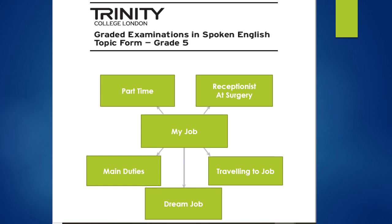I have chosen my job here, and the job I have chosen is receptionist at a surgery. You can write whatever you like, whatever your job is. You have to download this form from the internet, from the Trinity College website, and then fill it in. I filled it on the laptop, so you can see these things are typed, but you just print the form and fill it with your hand — handwritten is acceptable. The main topic goes in the center box.